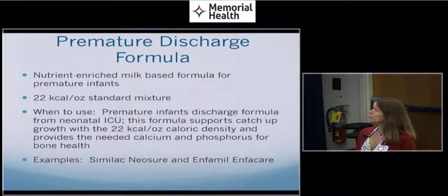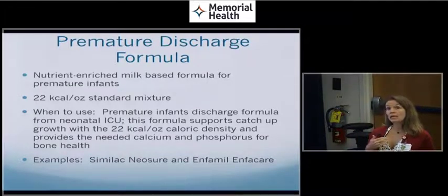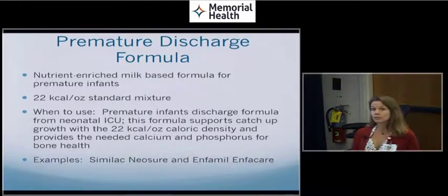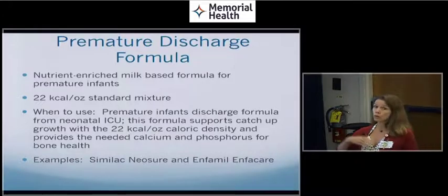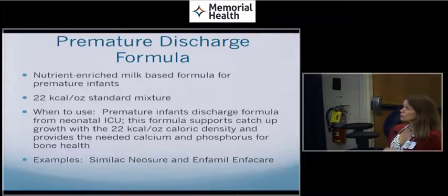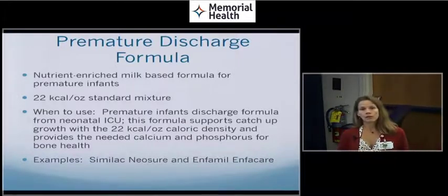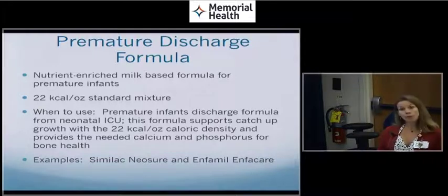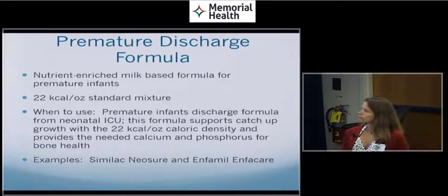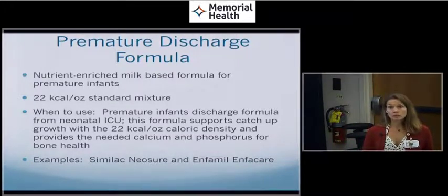This particular formula is nutrient enriched. It's a milk based formula and it is specific for those premature babies. If you'll notice it does have more calories as the standard mixture because they need those calories to grow. It's very important to have that 22 calorie per ounce mixture or higher. Many premature babies are on higher concentrations of formula. We use these when they're discharged from the neonatal ICU. The formula supports catch up growth. And it provides the needed calcium and phosphorus for their bone health. Examples of those formulas are going to be Similac Neosure and Enfamil Enfacare.